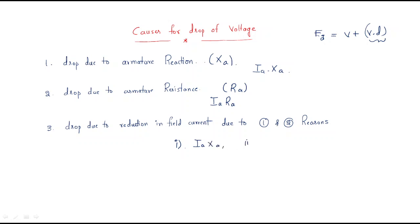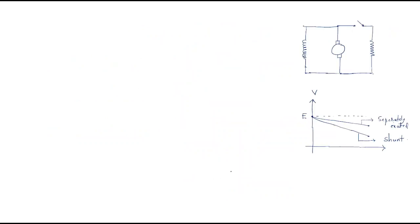The third cause is reduction in field current due to the first two reasons — armature reaction and armature resistance. Because of these two reasons, the field current also decreases, since some of the generated EMF is wasted, causing the total EMF to decrease.